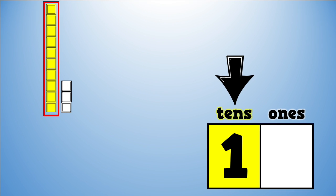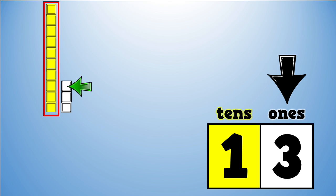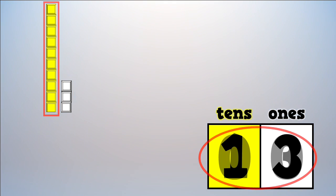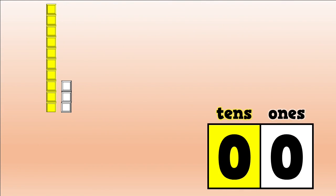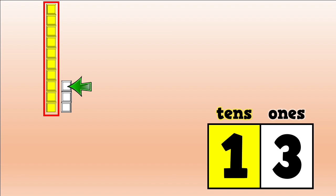There is one group of ten. Now let's check for extra ones: one, two, three. There are three extra ones. What number did we make? Thirteen, that's right. Let's count by tens and then count on to see if we get thirteen: ten, eleven, twelve, thirteen. Good counting.